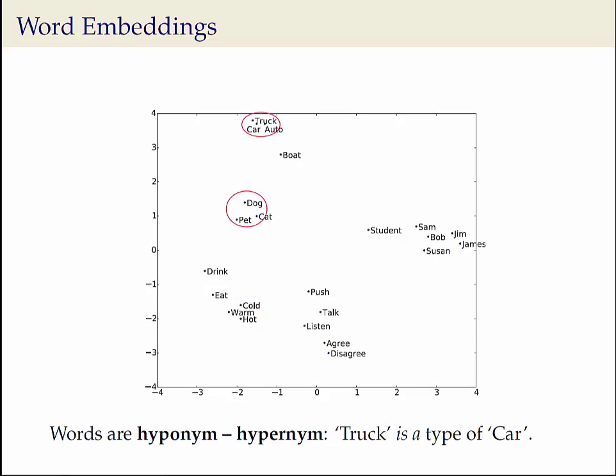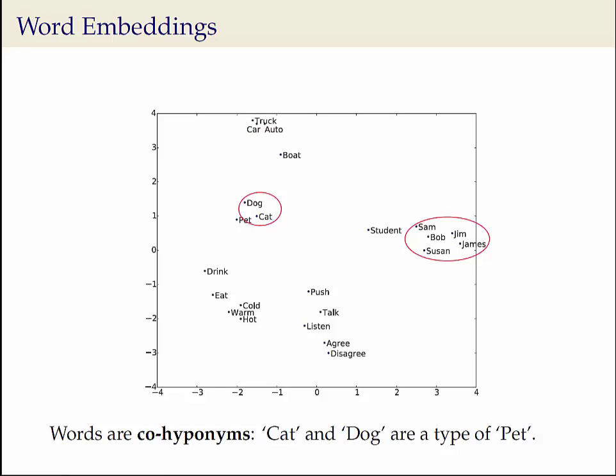Another type of relationship is the hyponym-hypernym one, or words being in a type-of relationship. For example, truck is a type of car and dog is a type of pet. Words can also be co-hyponyms — that is, being a type of the same concept but the words are not synonyms. For example, both dog and cat are a type of pet but they are not synonyms.